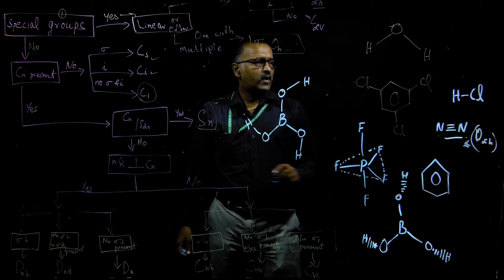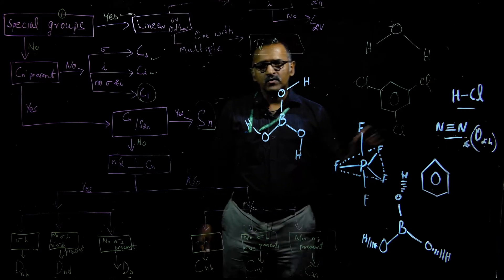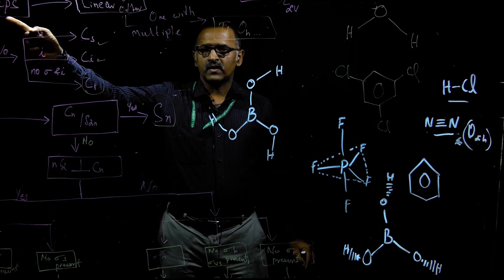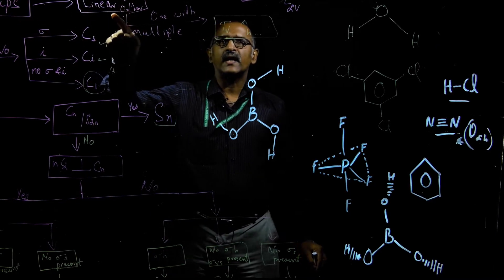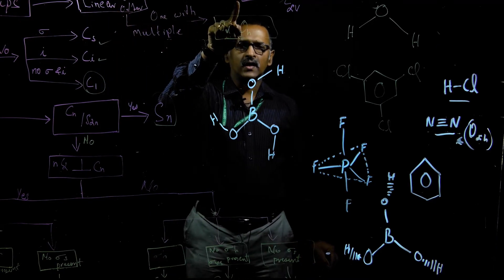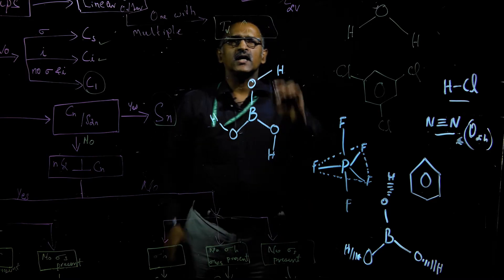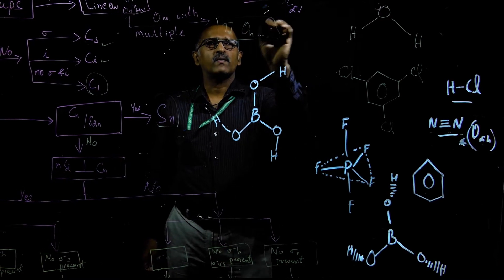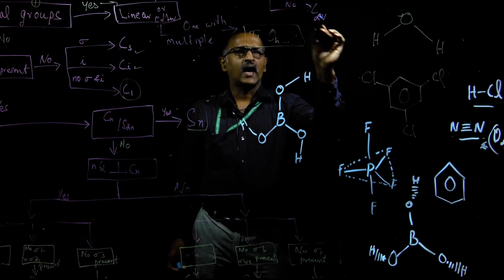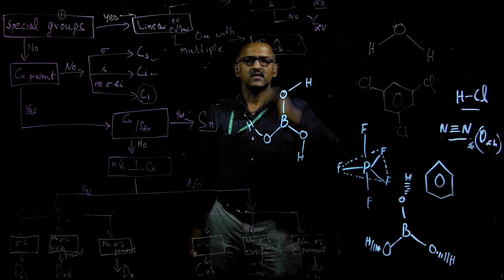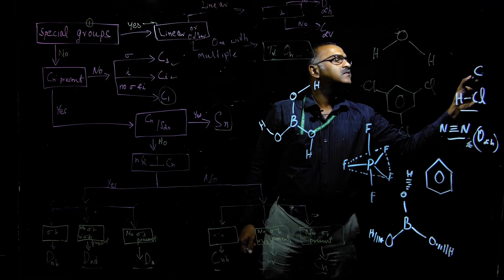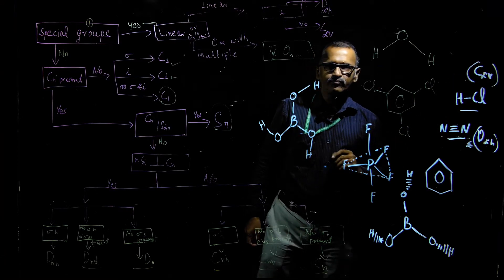What about the HCl molecule? It is also a linear molecule, so it belongs to a special group. However, checking for inversion symmetry, HCl does not have inversion symmetry — the two ends are different (H and Cl). So the answer is no, and the point group of HCl is C∞v.